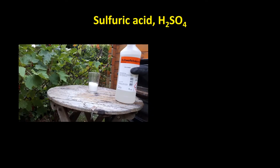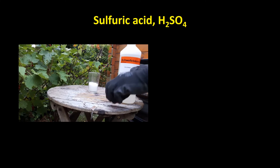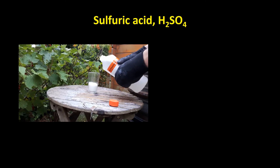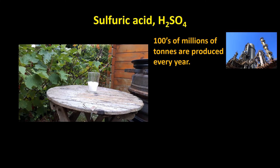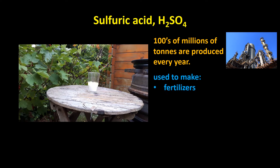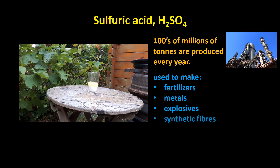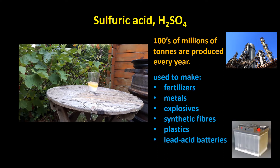This bottle contains concentrated sulfuric acid and the glass contains sugar. Sulfuric acid is the most widely used industrial acid on the planet. Hundreds of millions of tons are produced every year. About 60% of the output is used to make fertilizers, and it's also used in the production of metals, explosives, synthetic fibers, plastics, and much more. The acid in lead acid batteries in our cars is sulfuric acid.